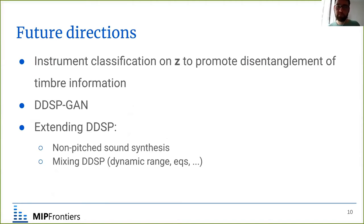We started hacking towards a multi-instrument timbre transfer without relying on multiple decoders, by introducing an instrument classification loss term in the latent code of the autoencoder to promote disentanglement of timbre information. Since I've been working with GANs in my PhD, we found it interesting to explore applying DDSP in a GAN training setting. Another research direction is extending the library with missing DDSP blocks targeting other synthesis types for inharmonic sounds in percussive instruments, and adding audio processing blocks oriented towards audio mixing.